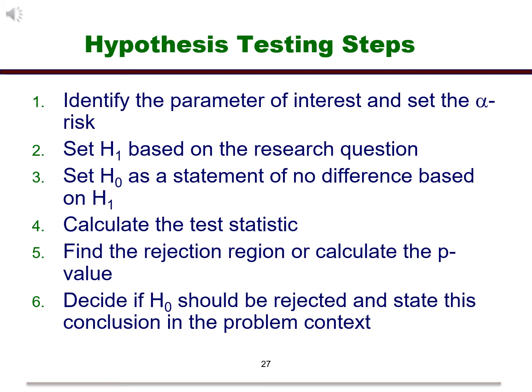Here are the steps one should go through in running a hypothesis test. First, identify the parameter of interest. This could be the mean, proportion, or any other parameter. One would then set the null and alternative hypotheses. The alternative hypothesis should be the hypothesis that you would like to prove with some certainty. Then determine the test statistic and make your decision. Now when you present the results, you should state them in the context of the problem.